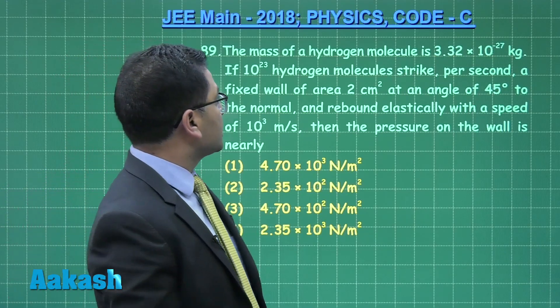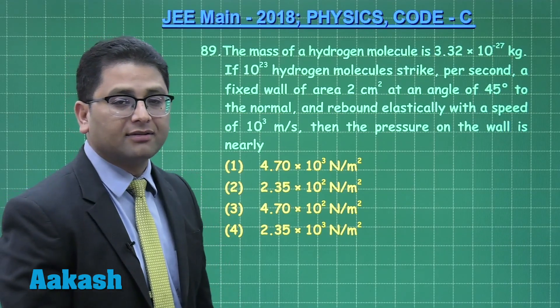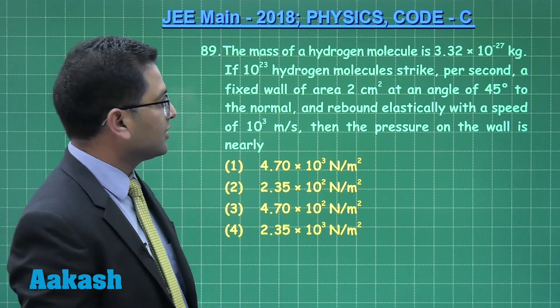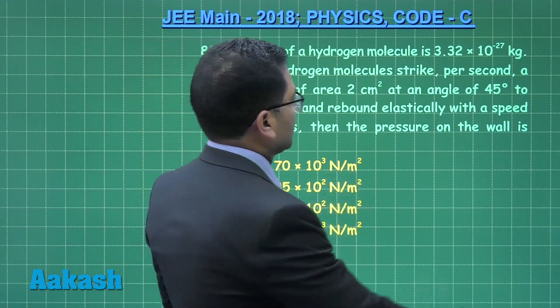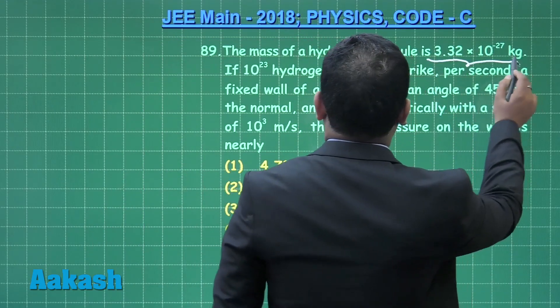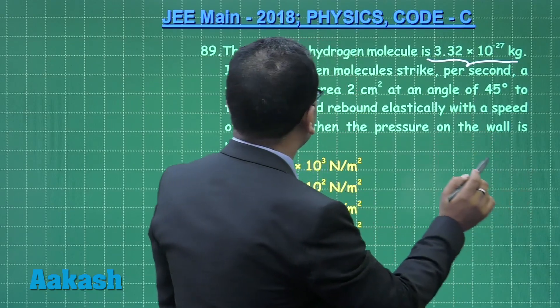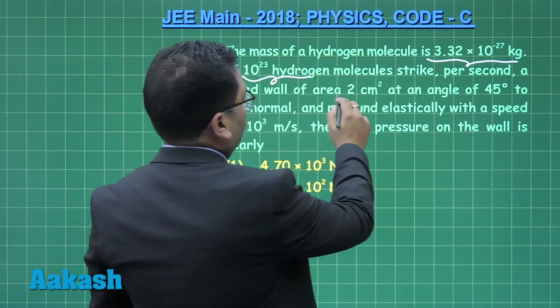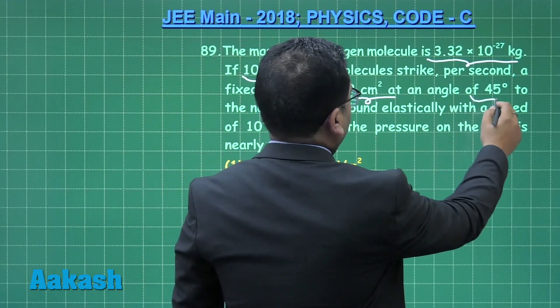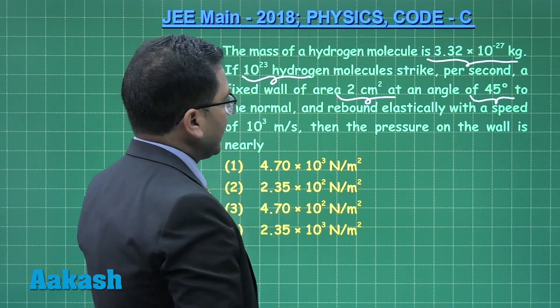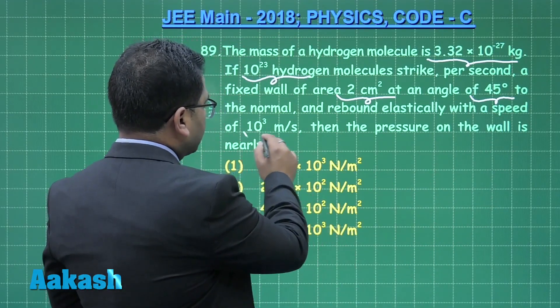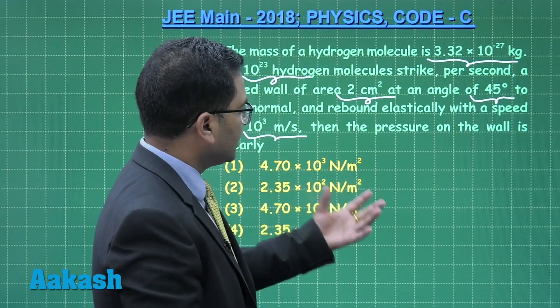All right, now let's see question number 89. It has been derived from KTG, the kinetic theory of gas, straightforward question. Mass of one molecule has been given. So many hydrogen molecules strike per second a fixed wall of area this much at an angle of 45 degrees.